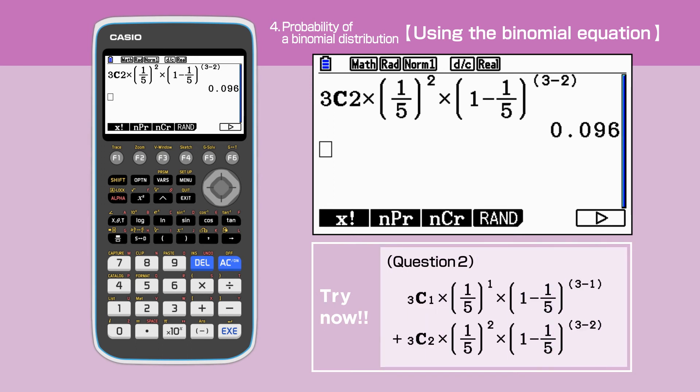We are solving the second question now. The probability of drawing winning tickets is the addition of two cases: drawing one winning ticket or drawing two winning tickets. Enter 3 choose 1 times 1 over 5 times 1 minus 1 over 5 to the power of 3 minus 1 plus 3 choose 2 times 1 over 5 squared times 1 minus 1 over 5 to the power of 3 minus 2 in the calculator.